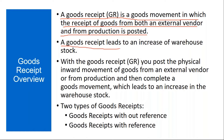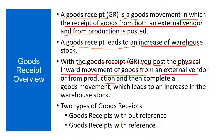A Good Receipt leads to an increase of warehouse stock. It results in an increase in stock at the storage location. With the Good Receipt, you post the physical inward movement of goods from an external vendor or from production, which leads to an increase in warehouse stock. Either the external supplier or the internal production team can do the GR.